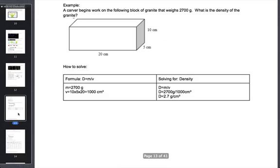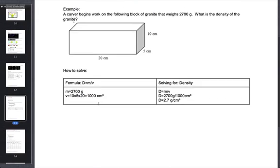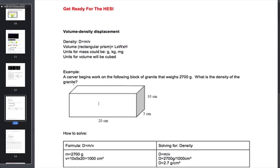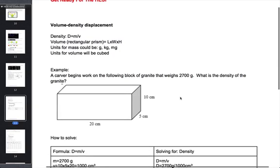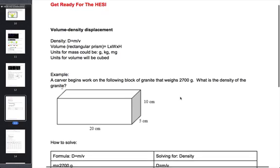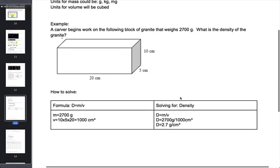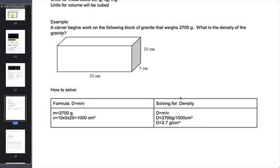And then one of the most missed questions for the HESI chemistry is actually density. Solving for density. Solving for volume. And the formula is density equals mass divided by volume. So we go into detail about that. We explain it. We break it down. We give you the formula and show you how we solve it.